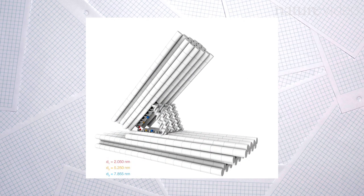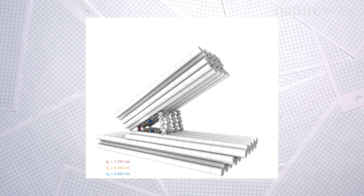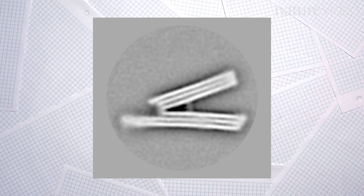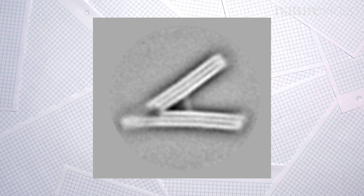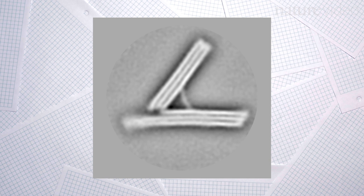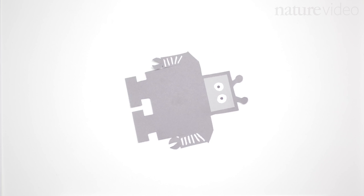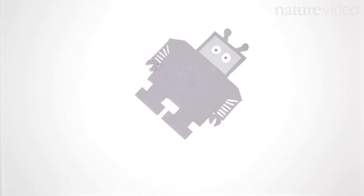Scientists are developing DNA structures whose movements can be precisely controlled. And if you combine this machinery with things like sensors and circuits, you're well on the way to a nanorobot, all made from DNA.